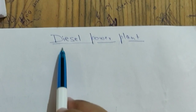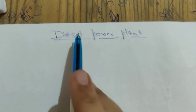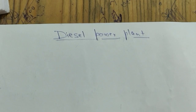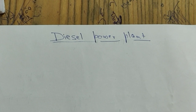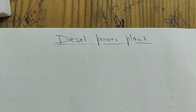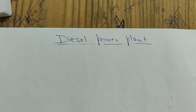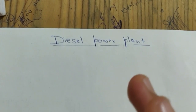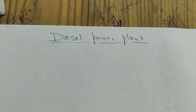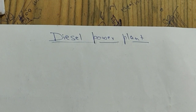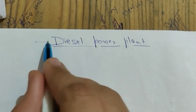Welcome to another lecture by SupremeTuber. In this lecture we will be discussing the layout of a diesel power plant. The diesel power plant is a small type of power generation unit used in households during a sudden power cut. It is used for short-term supply of electricity. It has various benefits like quick starting and high efficiency, but there are also disadvantages like it being costly, noisy, and causing pollution.